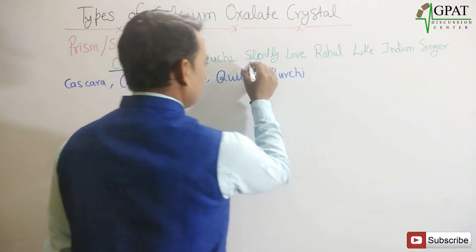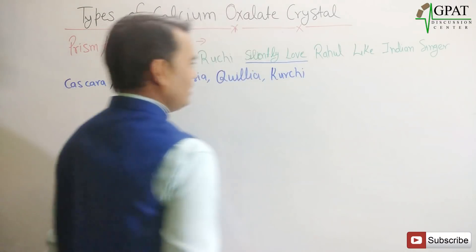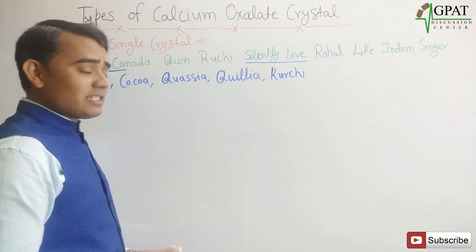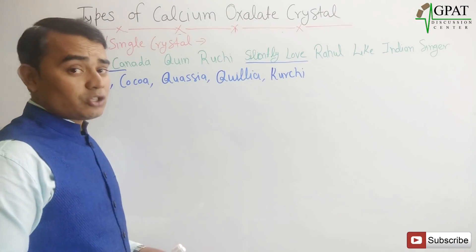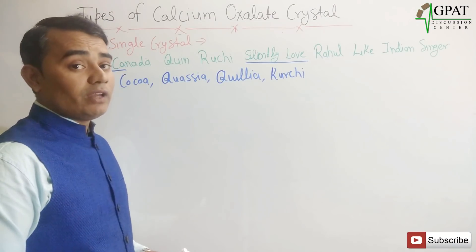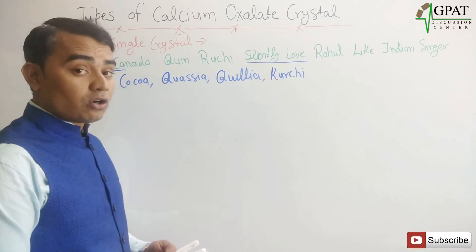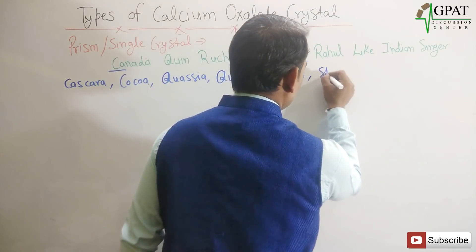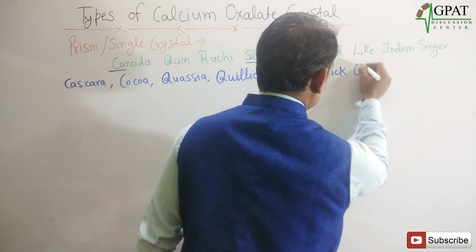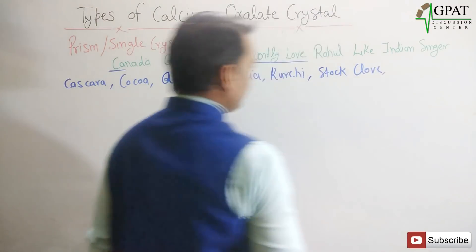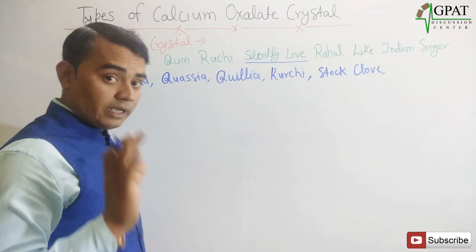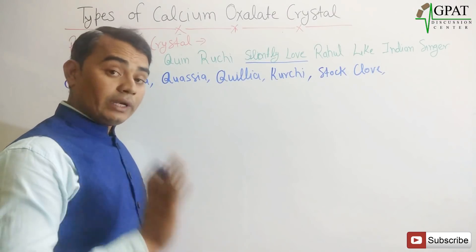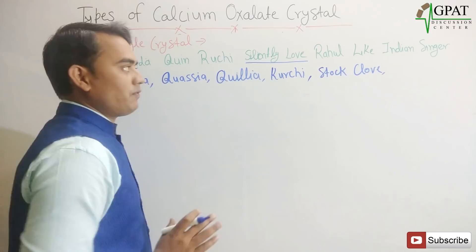'Silently love' — S for Stock, L for Clove — means Stock Clove. Important note: in clove itself, the prismatic type of crystal is not present; it is only in the stock of clove (stalk clove) that the prismatic type crystal is present.